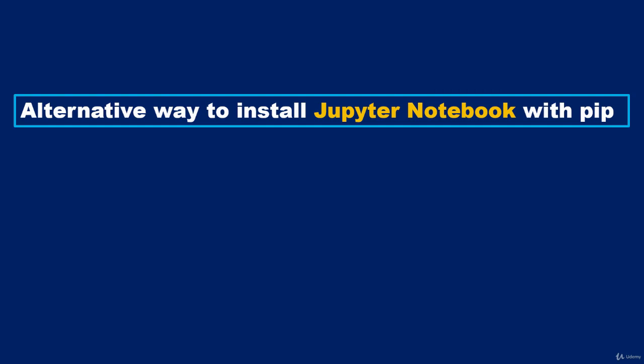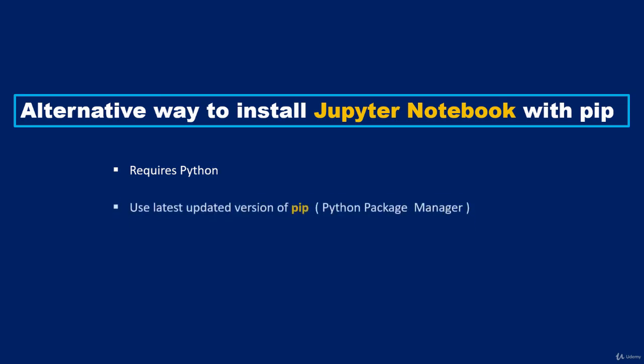Another way to set up Jupyter Notebook is using the Python package manager known as pip. This is recommended only for experienced Python users. Before setting up Jupyter via pip, you must already have Python installed, and you need the most recent version of pip.